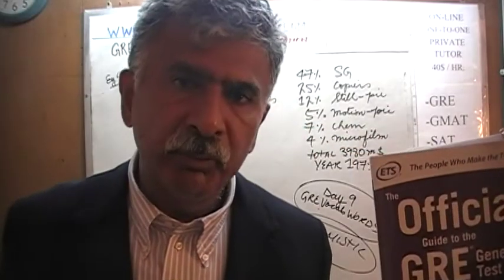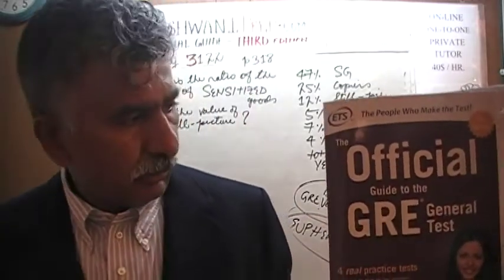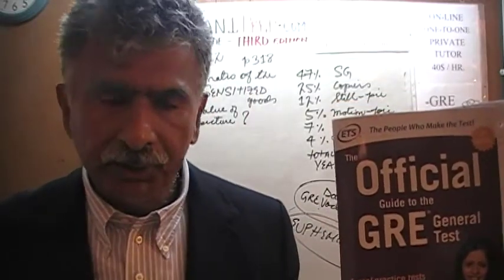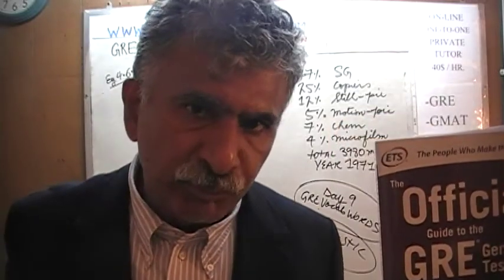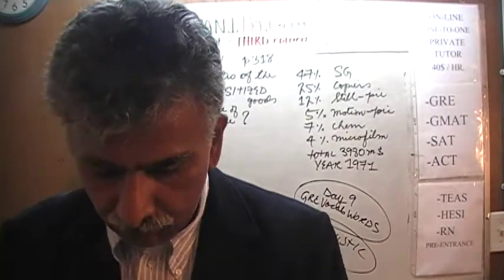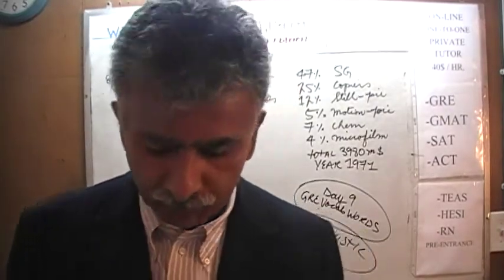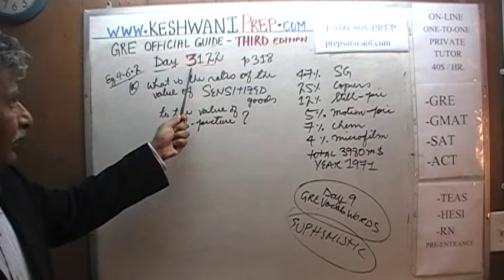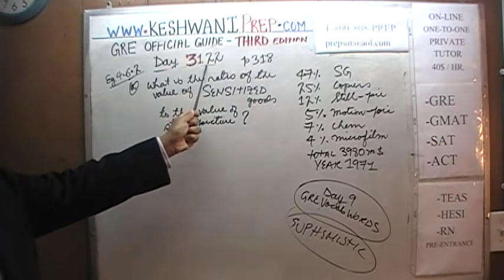We are here because we want to prepare for the GRE. We have been solving math problems out of this book here, the official guide to the GRE, the third edition. If you do not own this book already, purchase it immediately — you're going to need it. Today is our lesson number 122, Day 3122. Three is to signify the fact that we are in the third edition. Third edition, day 122.